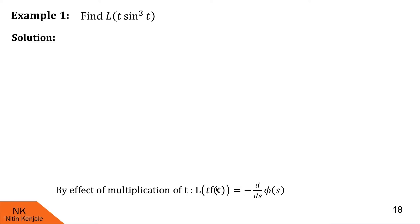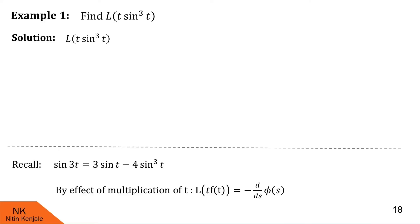That means we have to first find out Laplace of f of t, and in our case f of t is sine cube t. To do so, I would like to recall the trigonometric identity of sine 3t, which is 3 sine t minus 4 sine cube t. So sine cube t can be written as 1 by 4 into 3 sine t minus sine 3t.